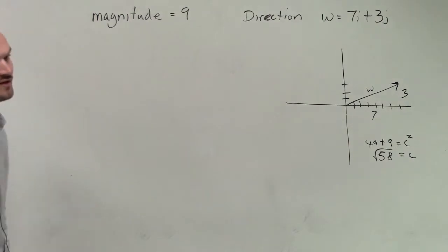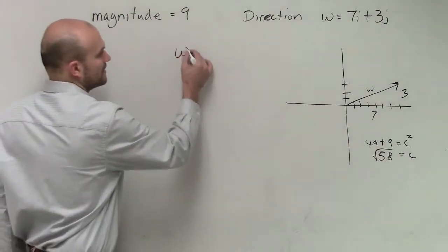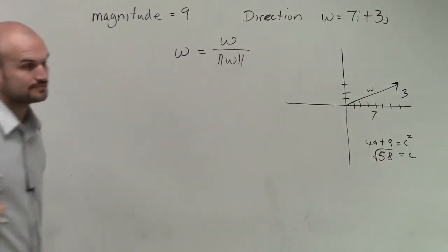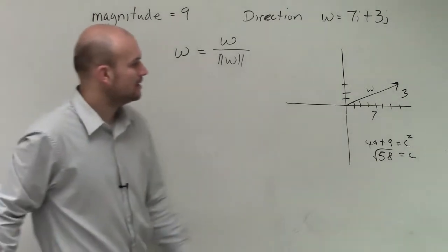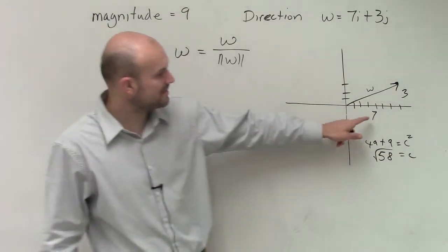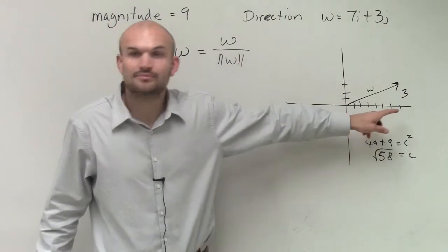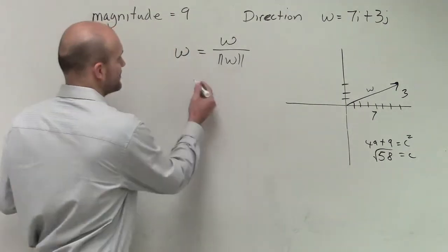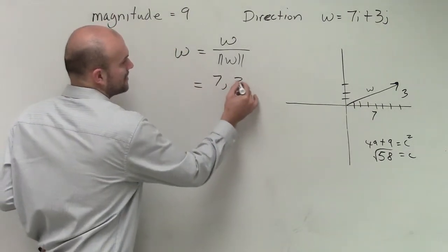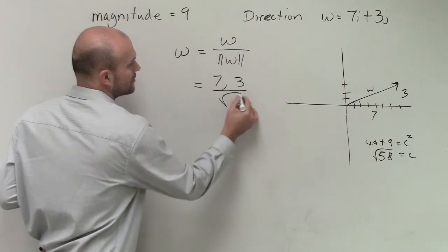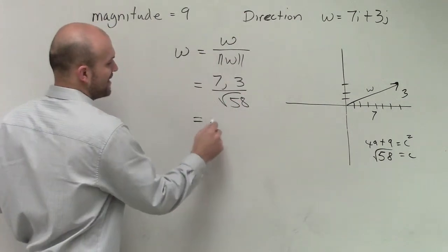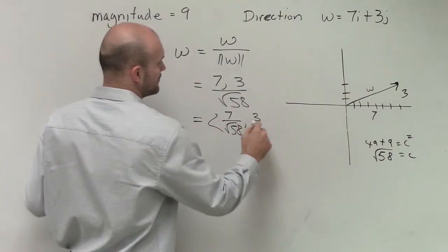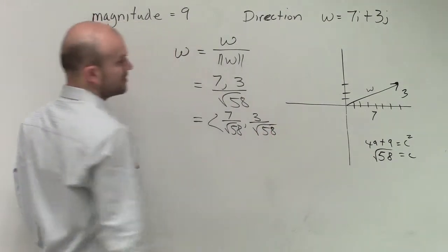So how do we get a vector to be a unit vector? We take our vector w and divide it by its magnitude. We already figured out that magnitude is the square root of 7 squared plus 3 squared, which is the square root of 58. So the unit vector is 7 over the square root of 58, 3 over the square root of 58.